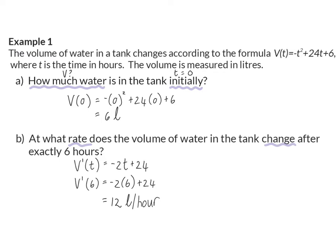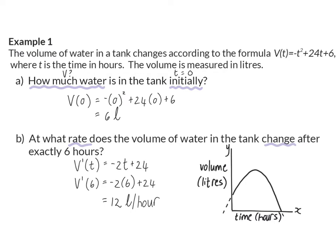If you were to take this formula and represent it in a graph, it will be a parabola where the x-axis is time in hours and the y-axis is volume in liters. We know that the gradient is change in y over change in x, and that is why the unit will be liters per hour.